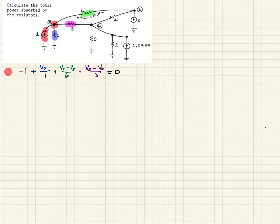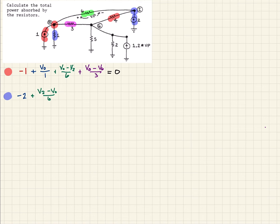Next we go to node two. The first thing we see is another current source going into the node, so that's a minus two. We already have the six-ohm resistor identified, so we write that as the difference in voltages between node two and node zero, divided by six. Then we have the four-ohm resistor, written as the difference between node two and node six over four. That's all the branches, so we set the sum equal to zero.